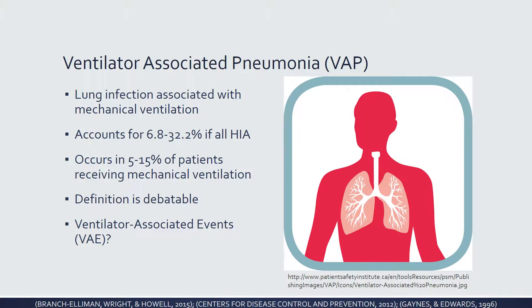The definition of VAP varies between sources. The most acceptable definition is that it is a lung infection that develops in a patient who is intubated and receiving mechanical ventilation. VAP accounts for 6.8 to 32.2% of all healthcare-associated infections, and occurs in 5 to 15% of patients who are intubated and receiving mechanical ventilation. However, these numbers can be inaccurate and misleading, as some centers have adopted different definitions of VAP, causing their reported numbers to differ drastically from their actual numbers.